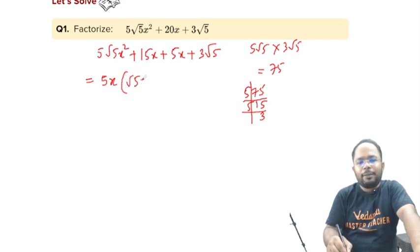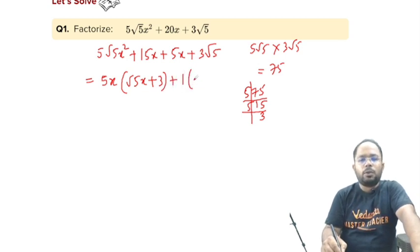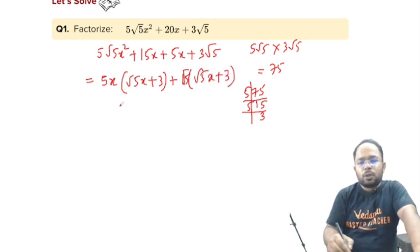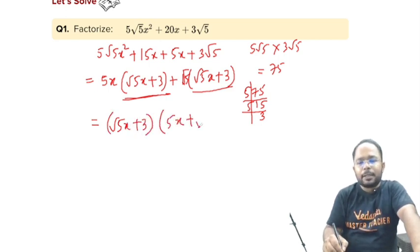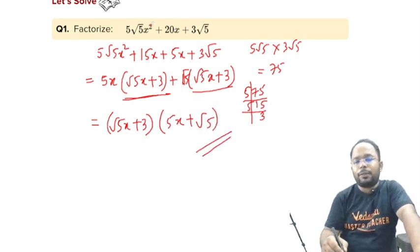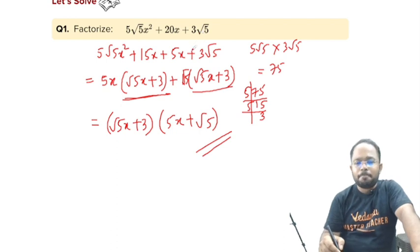From 5√5x² plus 15x, we can take 5x common. What is left, √5x plus 3. Here, we can take √5 common. It is left with √5x plus 3. We can take common √5x plus 3. What we get is 5x plus √5. These are the 2 factors of this expression.